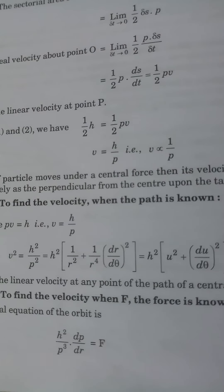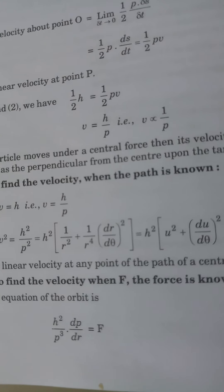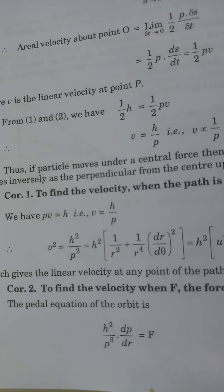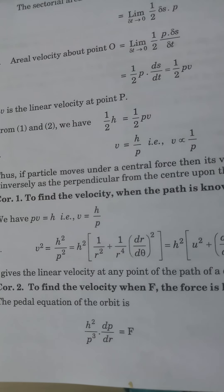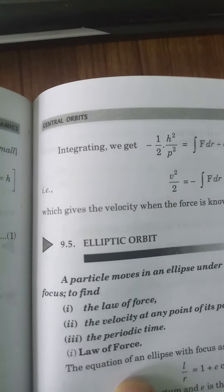Corollary 2 — To find the velocity when the force F is known: The pedal equation of the orbit is h²/p³ · dp/dr = F, equivalently h²/p² · dp = F dr. Integrating: v² = -∫F dr + c, which gives the velocity when the force is known.